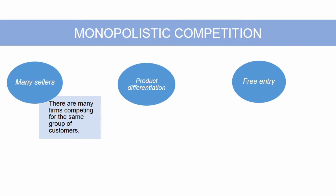Second, firms compete by selling differentiated products. Each firm produces a product at least slightly different from those of other firms. Consumers view each firm's brand as different from those of other firms. For example, Close-Up is different from Colgate, Sinsudine, Pepsodent, and a dozen other toothpastes.